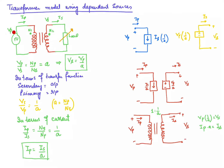Similarly, the voltage on the secondary side depends upon the voltage on the primary side. If you change the primary voltage, the secondary voltage changes, assuming the turns ratio is constant. This is expressed as Vs = Vp/a, so the secondary voltage can be represented by a dependent voltage source, with value Vp × (1/a).